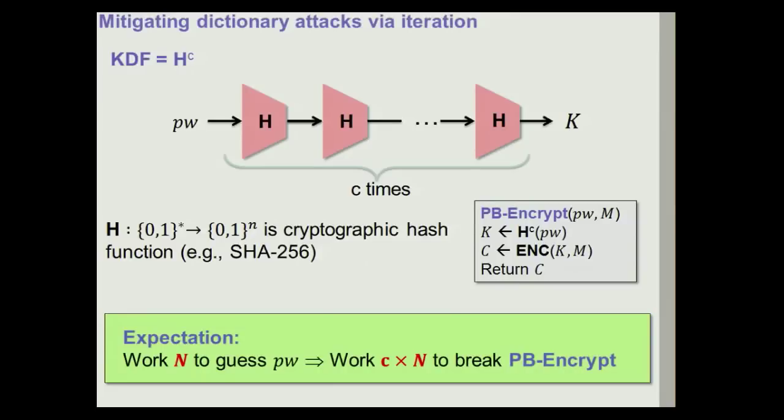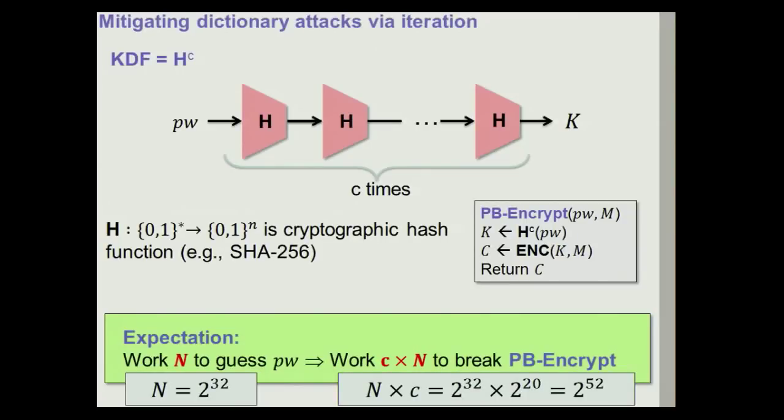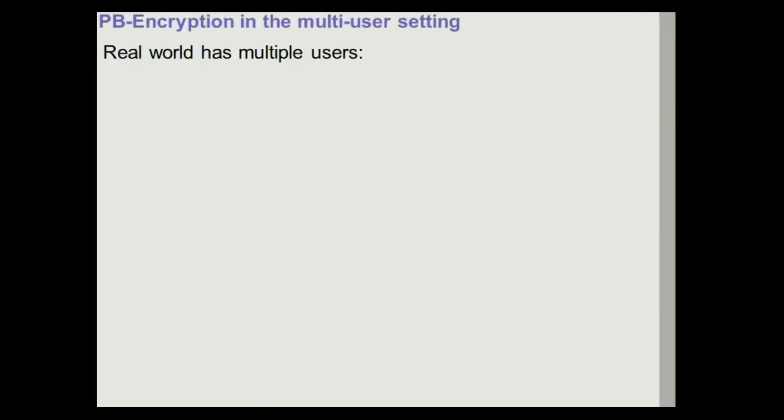But here we have to make an important point. Note that even if we assume that we choose passwords really well, so N is something like 2 to the 32, which would be fantastic, and we also let the KDF computation be very slow, so we let c be something like 2 to the 20, then at the end of the day, we're not going to get anything better than 52 bits of security, which is not really great. So it seems that we have an unavoidable fact, if you use password-based encryption, that it is very well possible that an attacker can break one particular instance of a password-based encryption scheme. So is this the end?